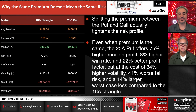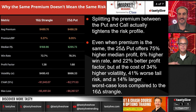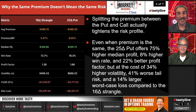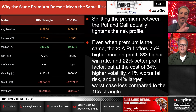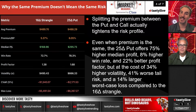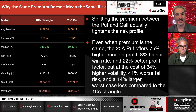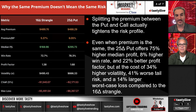Splitting the premium between the put and the call actually tightens the risk profile. When we say one standard deviation put, from a probability perspective moving to the 30 delta gives you a 70% probability of profit — the same probability. Even when premium is the same, the 25 delta put offers 75% higher median profit and an 8% higher win rate and 22% better profit factor, because the last five years have been mostly bullish.